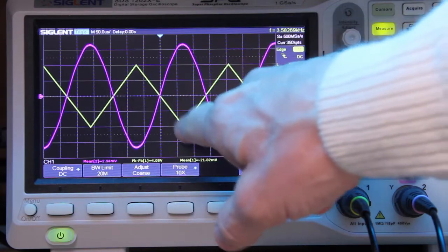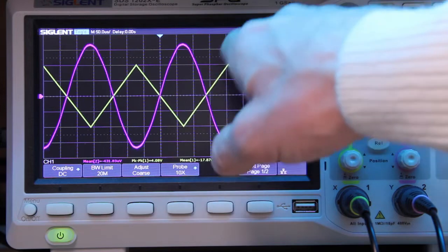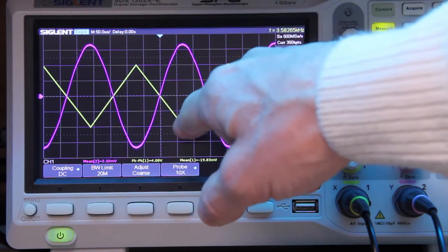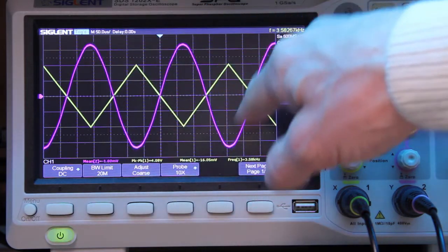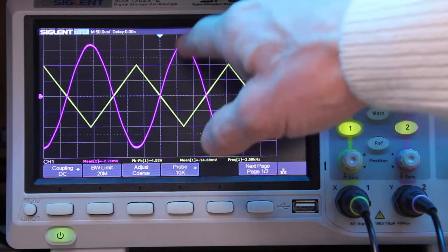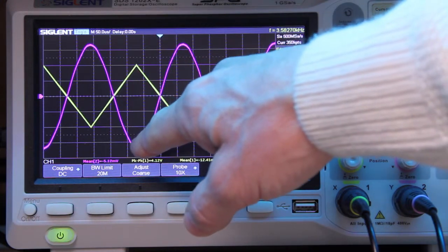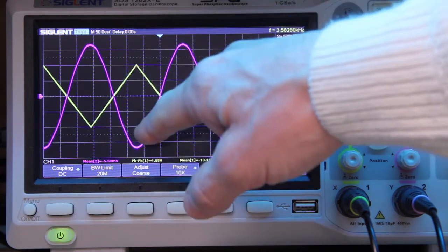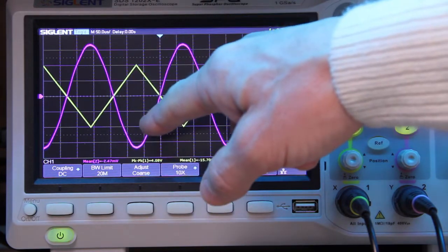And this is the signal. The yellow trace is of course the triangular waveform that is presented to the input of the wave shaper. And the pink waveform is the sine wave at the output of the wave shaper. And you will notice that the two are in opposite phase because of course the circuit is an inverting operational amplifier.